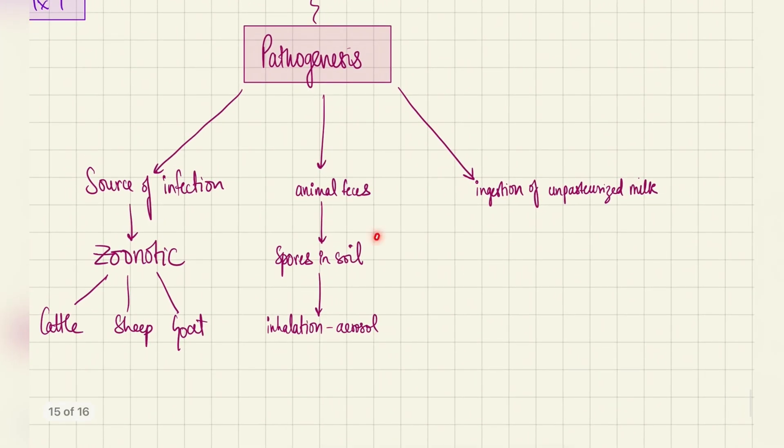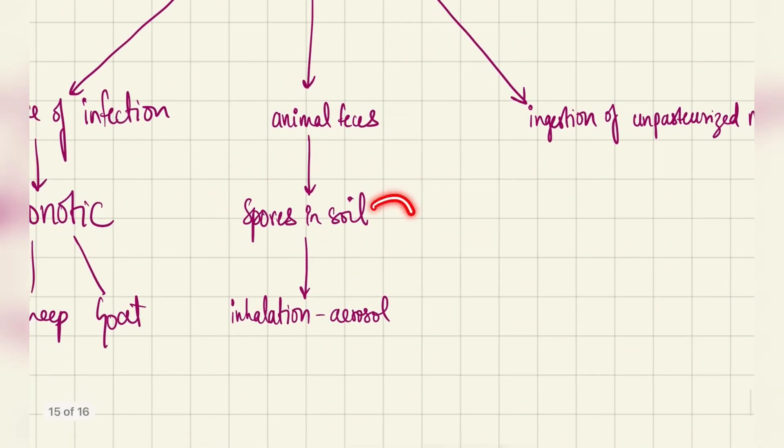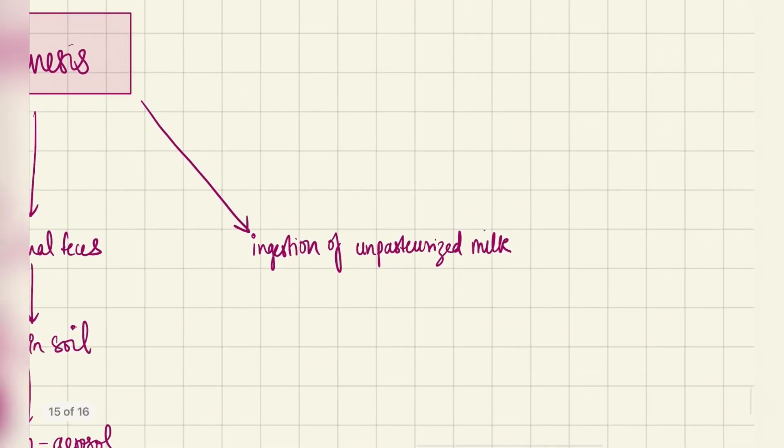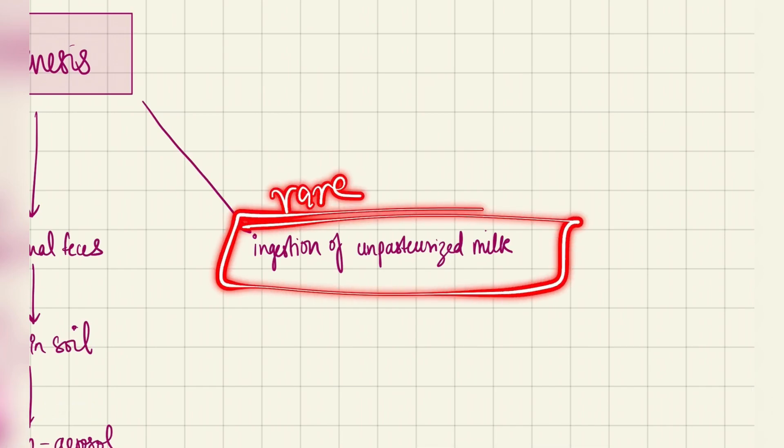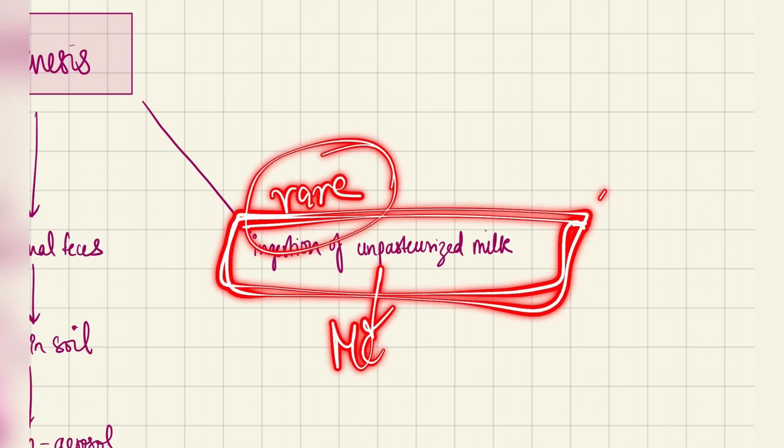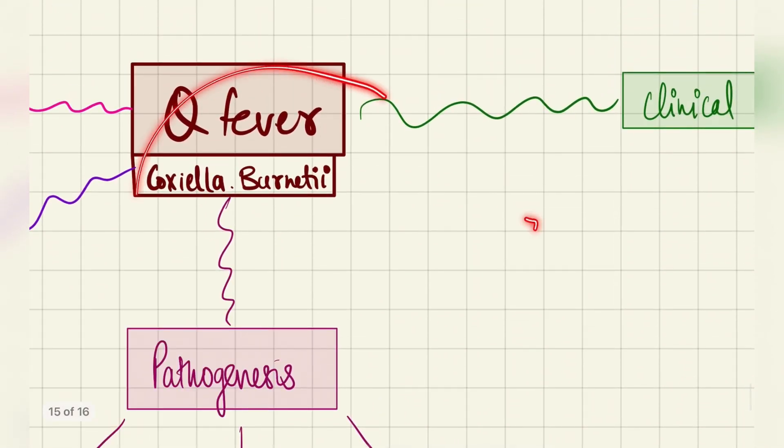Basically the animal feces lay down spores in the soil and the dust from this soil gets inhaled in the form of aerosols and causes this infection. Rarely it can also be caused by ingestion of unpasteurized milk. Even though it is rare, you get MCQs from here as well. Unpasteurized milk and a farmer, Q fever.